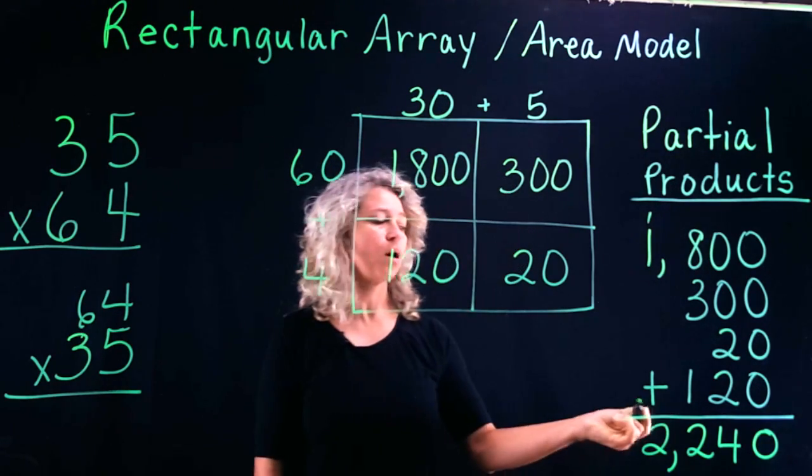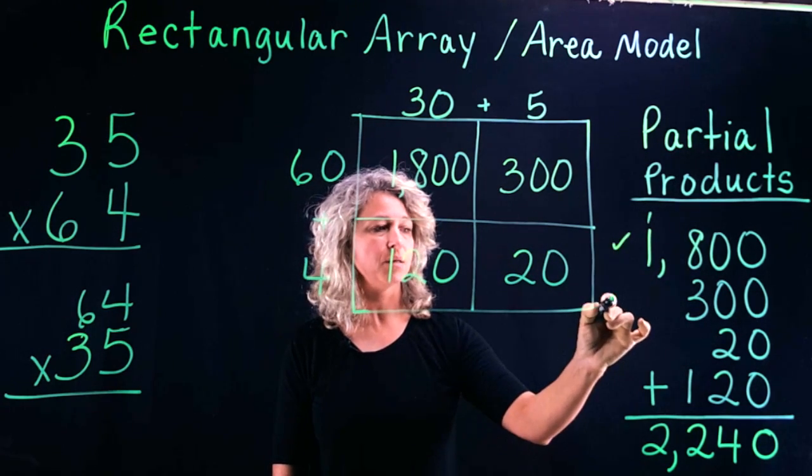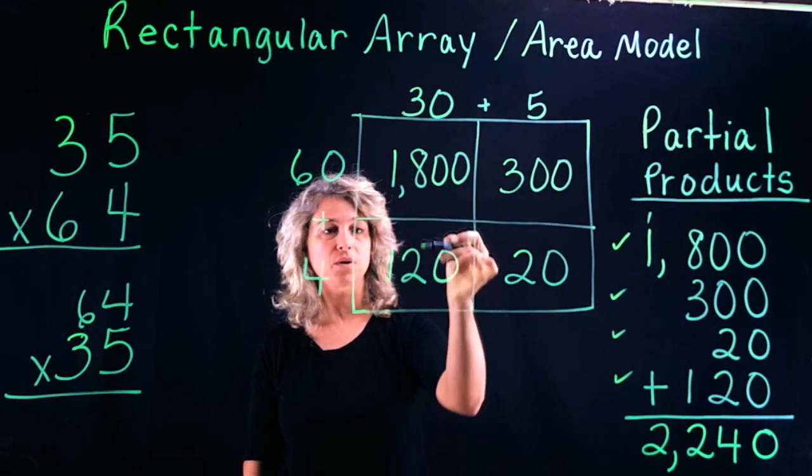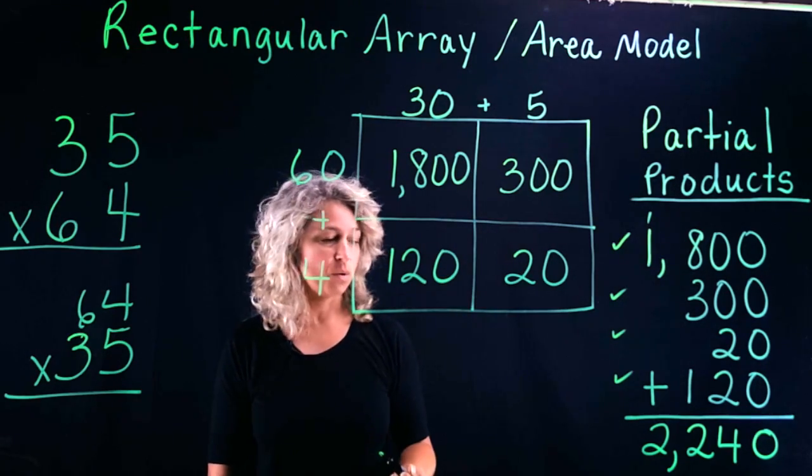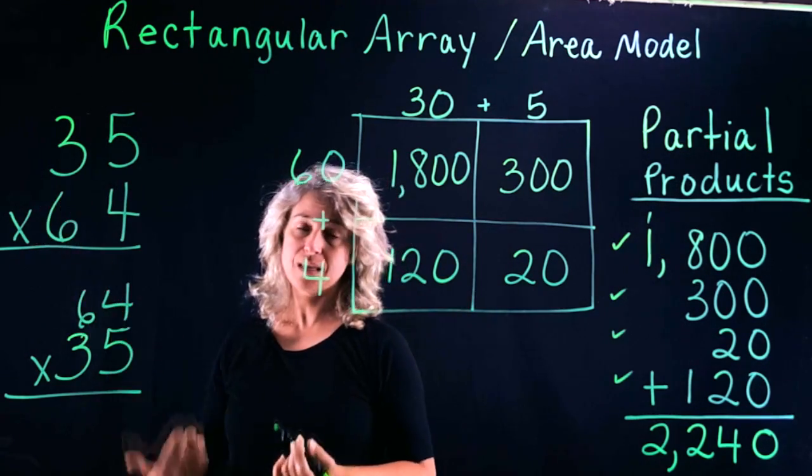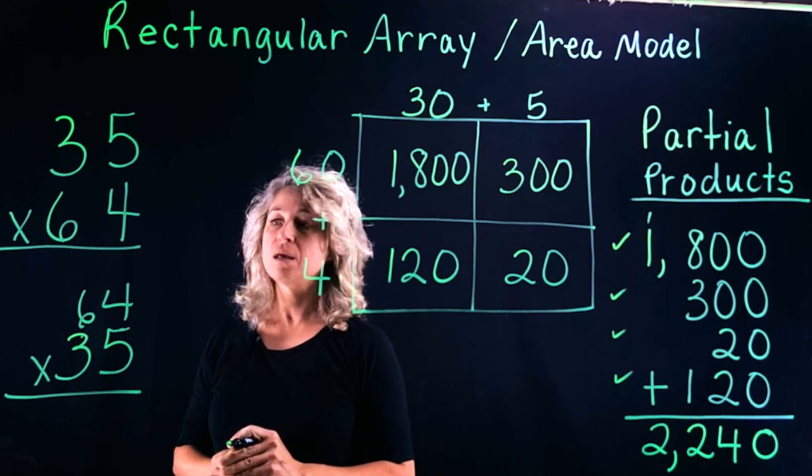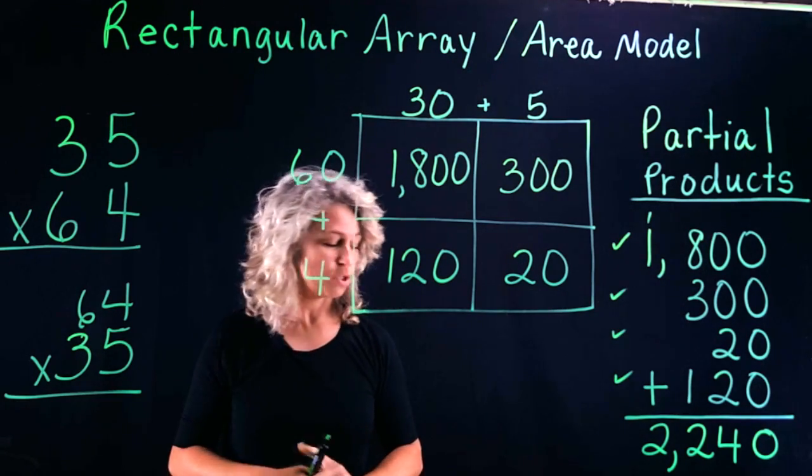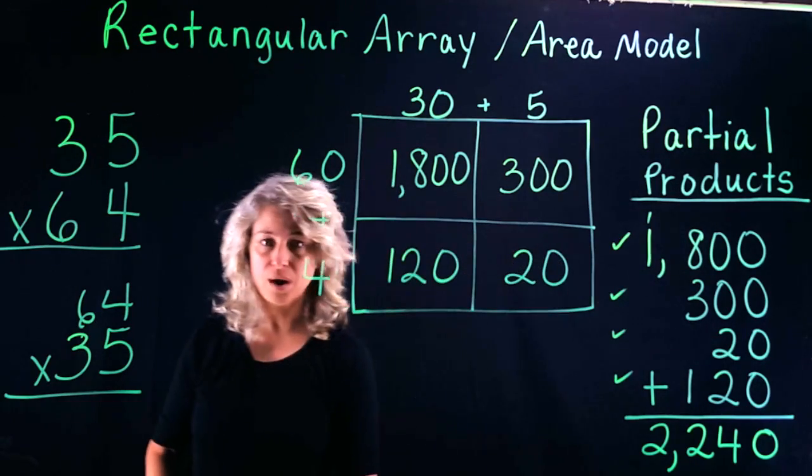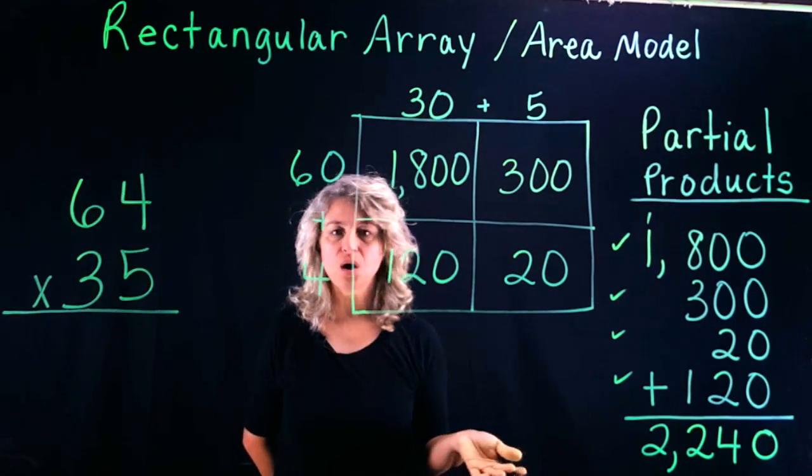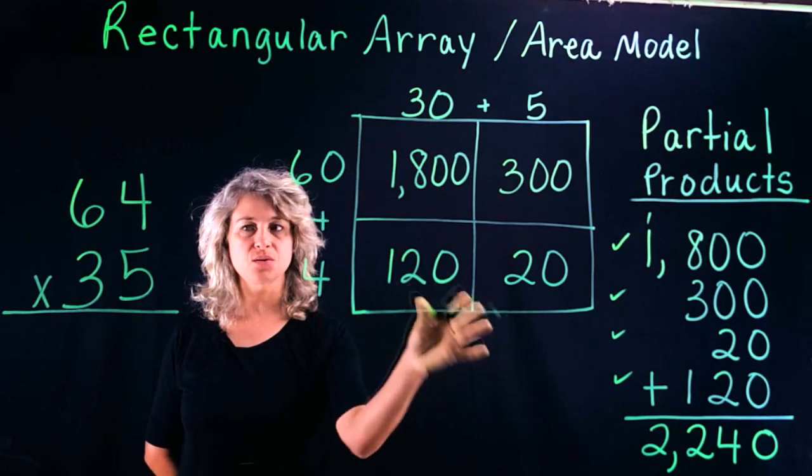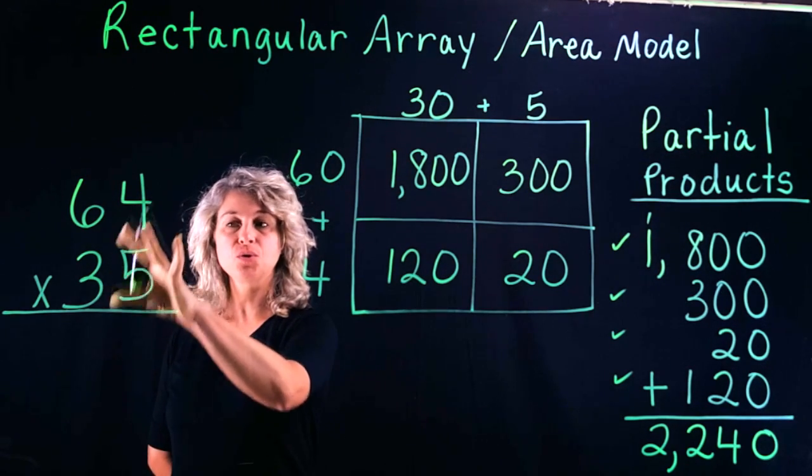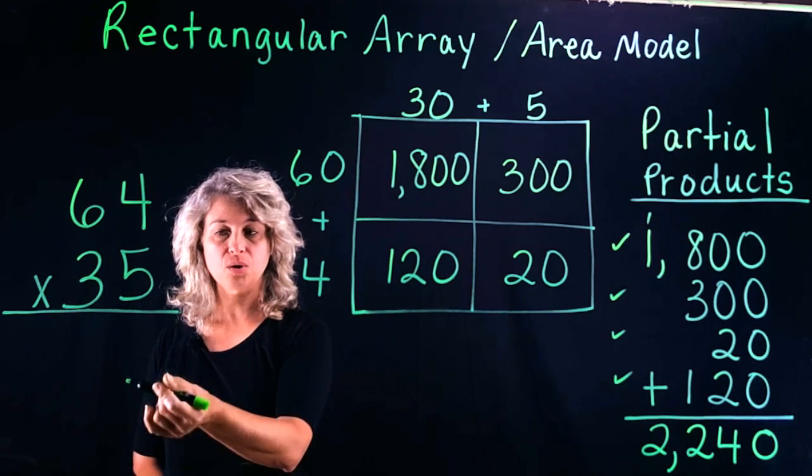Now one thing I want you to notice is the difference between this particular problem and another problem. We have four products—one, two, three, four—these are called partial products. So there are actually one, two, three, four. If you remember when we did the two digits times two digits the standard way or the turtle method, do you remember how many products we had? It wasn't four, was it? It was actually two products. So I want to show you how these two are similar, and you can check using this turtle method, but when you use the turtle method you will only have two partial products instead of four.